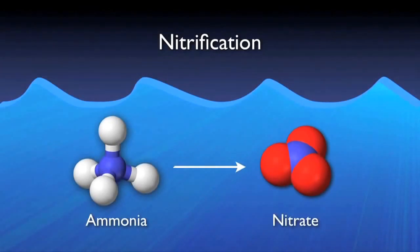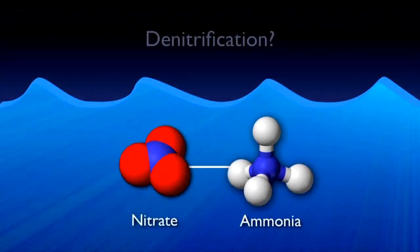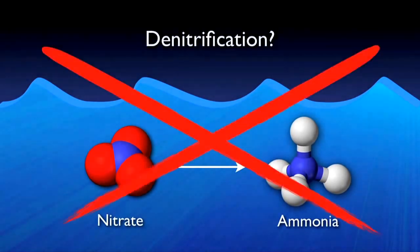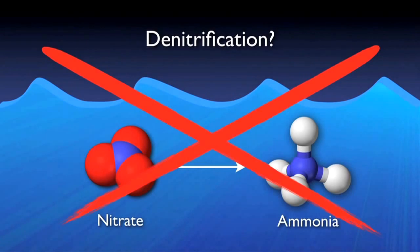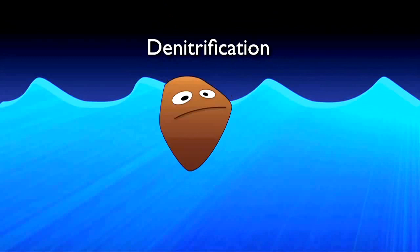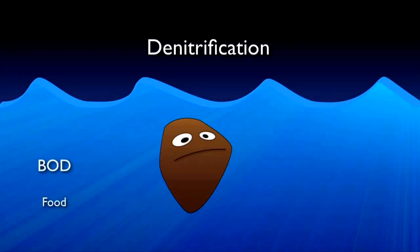The final step in completely removing nitrogen from the system is called denitrification. Denitrification is performed by specialized heterotrophic bacteria that require specific conditions. They need food (BOD), and in order to oxidize that food, they need oxygen. Their easiest first choice for oxygen is dissolved oxygen.